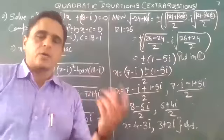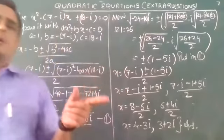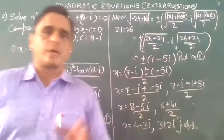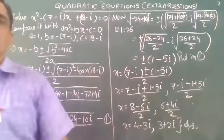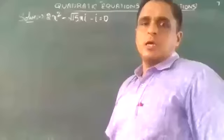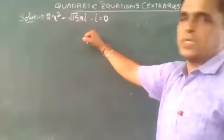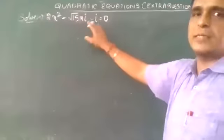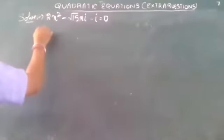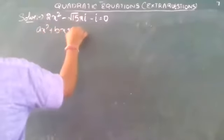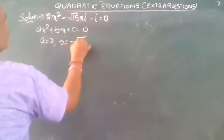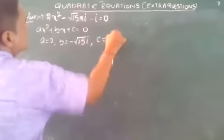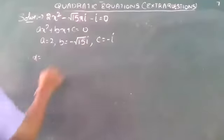As we know from class 10, a polynomial has as many zeros as its degree. Since this is a quadratic equation, it will always have 2 roots. Now the third question: solve 2x² - √15·i·x - i = 0. Comparing with ax² + bx + c = 0: a = 2, b = -√15·i, and c = -i.